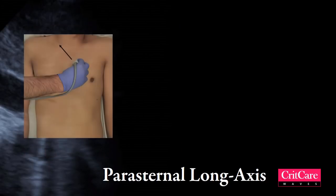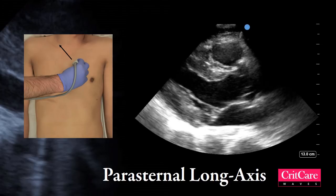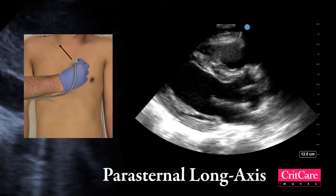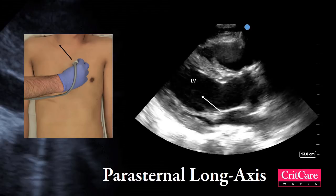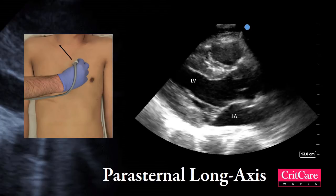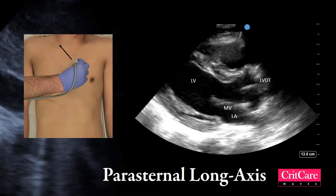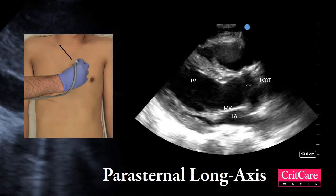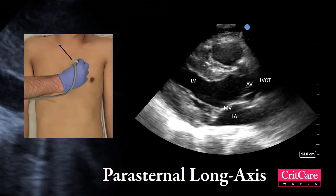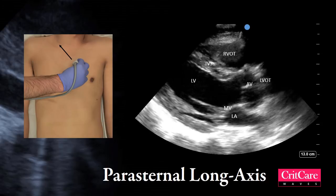This is a parasternal long axis view. The easiest way to figure out anatomy is to identify a chamber and the direction of blood flow. The thick-walled chamber is the left ventricle. Blood flows from the smaller chamber — the left atrium — into the left ventricle, with the mitral valve in between. The outlet is the left ventricular outflow tract (LVOT), and the aortic valve is seen proximal to the LVOT. The chamber closest to the probe is the right ventricular outflow tract (RVOT), with the interventricular septum between the left ventricle and the RVOT.